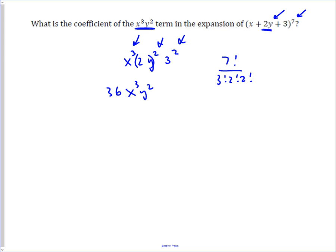And so you can just multiply this by 210, and when you multiply that out you end up with 7,560. And so that is the coefficient when you expand x plus 2y plus 3 to the 7th power, the x cubed y squared term has a coefficient of 7,560.